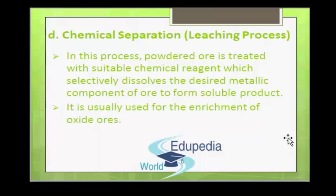The next process is chemical separation or leaching. In this process, the powdered ore is treated with a suitable chemical reagent which selectively dissolves the desired metallic component to form a soluble product. The impurities are left behind as an undesired residue. A suitable chemical treatment of the filtrate leads to the regeneration of the desired metallic component in concentrated form. This process is usually used for the enrichment of oxide ores.